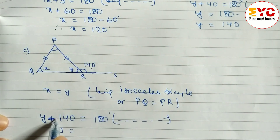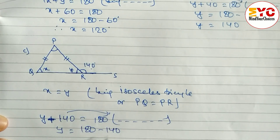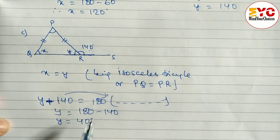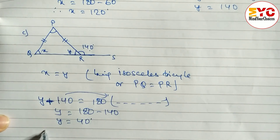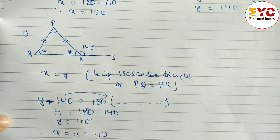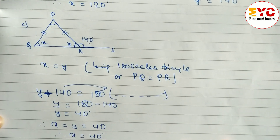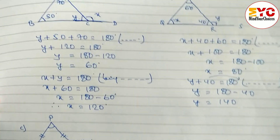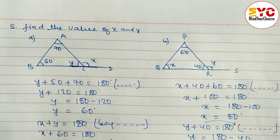Now we find the value of y. y plus 140 equals 180 degrees, reason: being a straight angle or supplementary angle. So y equals 180 minus 140, therefore y equals 40 degrees. Since x equals y, therefore x equals 40 degrees as well. So the value of x equals 40 and the value of y equals 40.